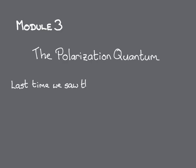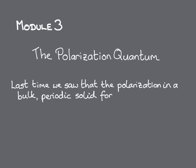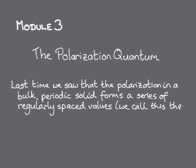In the last module, we saw that the polarisation in a bulk periodic solid is not a single value, but instead has a series of values. Since these values are regularly spaced, like the atoms in a crystal lattice, we call the series the polarisation lattice.